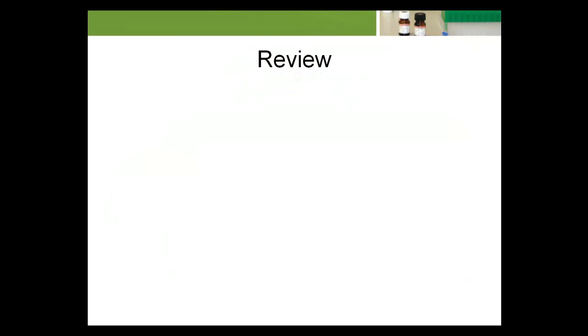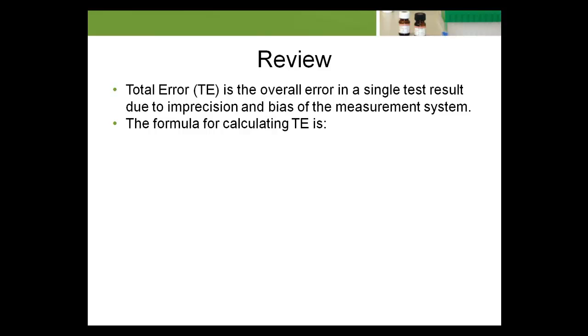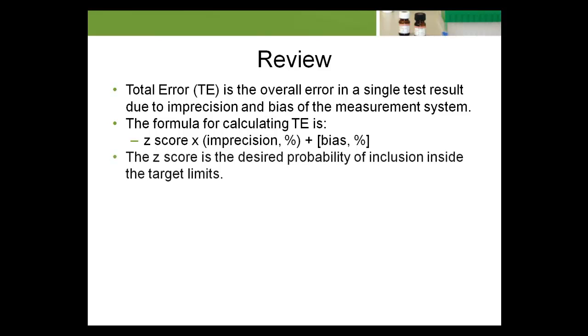Let's review what we've learned about total error TE. Total error is the overall error in a single test result due to imprecision and bias of the measurement system. The formula for calculating TE is z-score times imprecision percent plus bias percent.